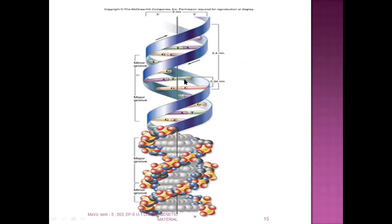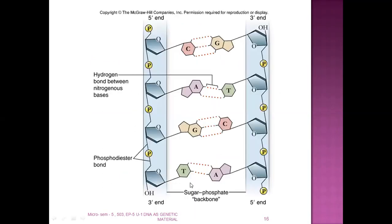Adenine always binds with thymine and guanine with cytosine. This is the structure of the DNA showing the sugar moieties. In the chemical representation, A binds with T via a double bond and C binds with G via a triple bond — so C-G bonds are stronger compared to A-T bonds. Hydrogen bonds are present between the bases, whereas phosphodiester bonds connect the DNA backbone moieties.